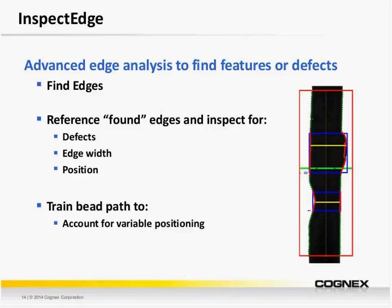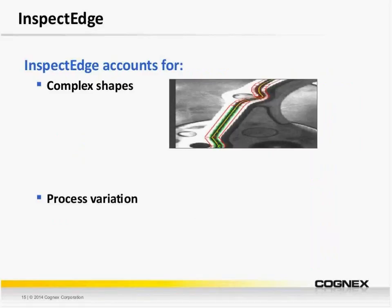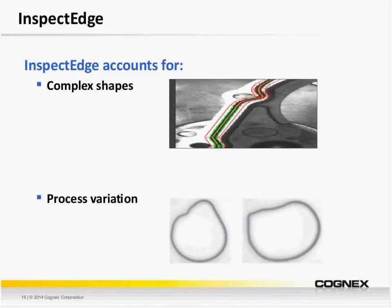At a high level, the goal of InspectEdge is to be both robust and flexible depending on the application. There are two things we want to handle: complex shapes and process variation. In handling complex shapes, we can follow a complex path to perform edge analysis. Second, we want to handle process variation — we may have a range of valid shapes, paths, and locations, and we want to be able to inspect for defects such as excessive widths, thin sections, or gaps.